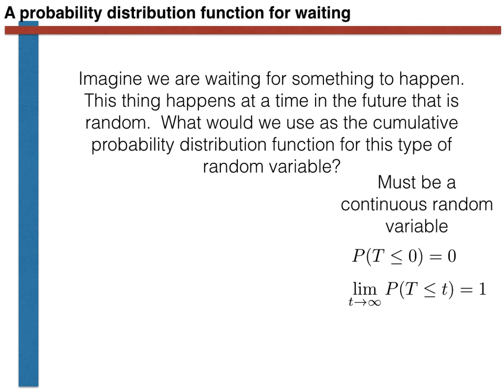The last thing we need is that in the limit as T tends to plus infinity, the probability that capital T is less than or equal to small t must equal one. In other words, the event has to be guaranteed to occur in the future. This is one of the three properties of the cumulative probability distribution that all random variables must have.